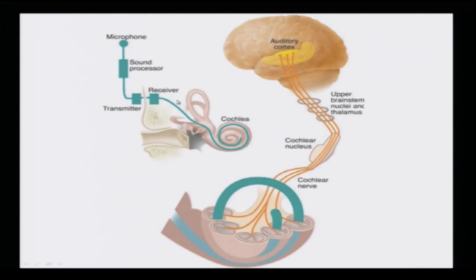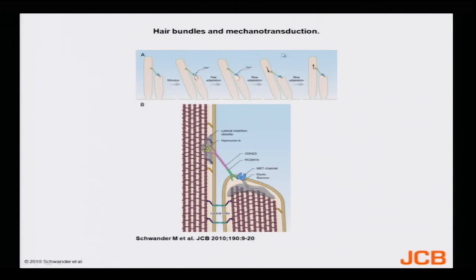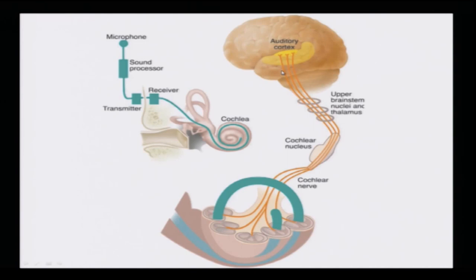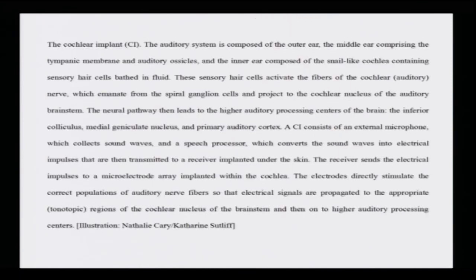Essentially what you are doing is — say, for example, if your hair cells are all damaged — you feed the sound information directly to the cochlear nerves. The cochlear nerves carry the whole information through the cochlear nucleus to the auditory cortex of the brain, where it is being processed. You are bypassing the whole cochlea, and this is what I wanted to highlight in one of the previous lectures.